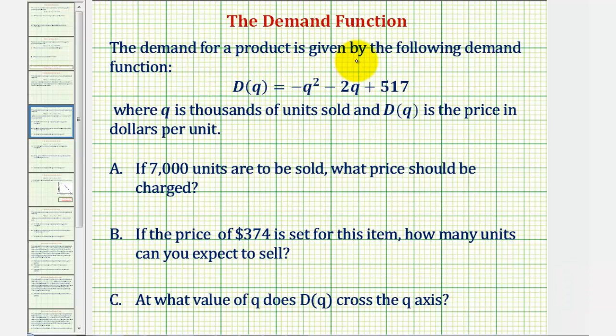The demand for our product is given by the following demand function: D of Q equals negative Q squared minus 2Q plus 517, where Q is thousands of units sold and D of Q is the price in dollars per unit.